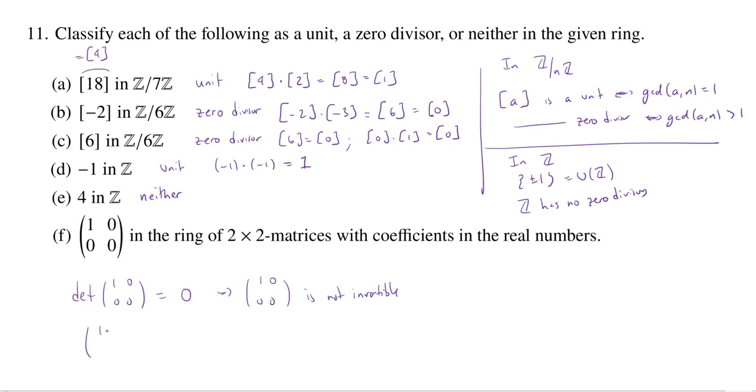On the other hand, some very basic matrix multiplication, you'll see very quickly, if I multiply by (0, 0, 0, 1), this does give me the zero matrix. So, in fact, I have a zero divisor.